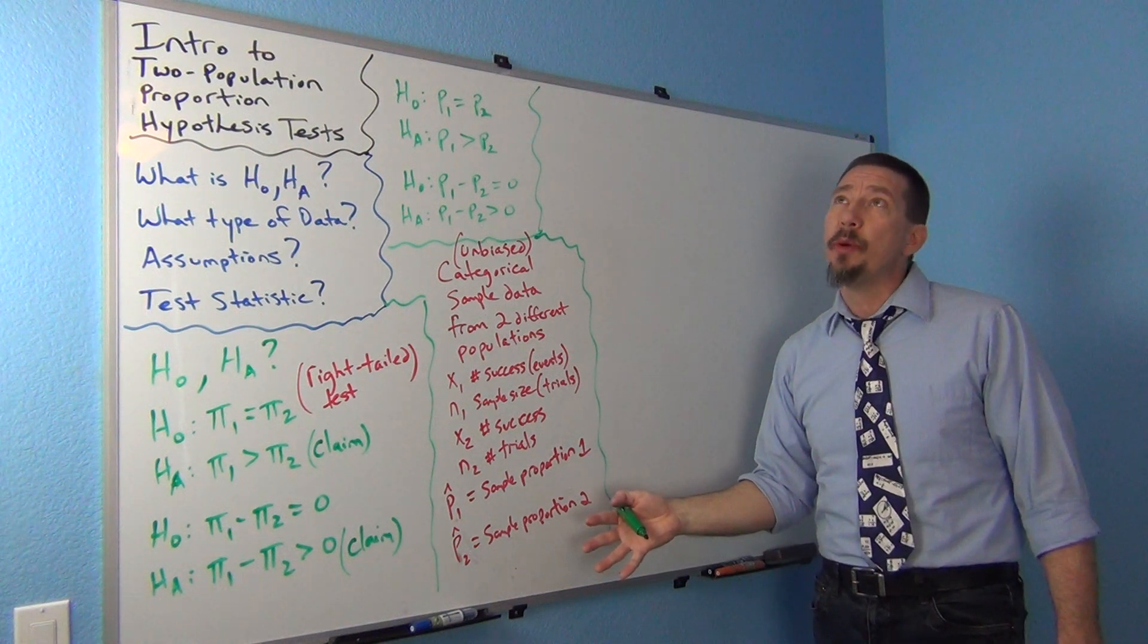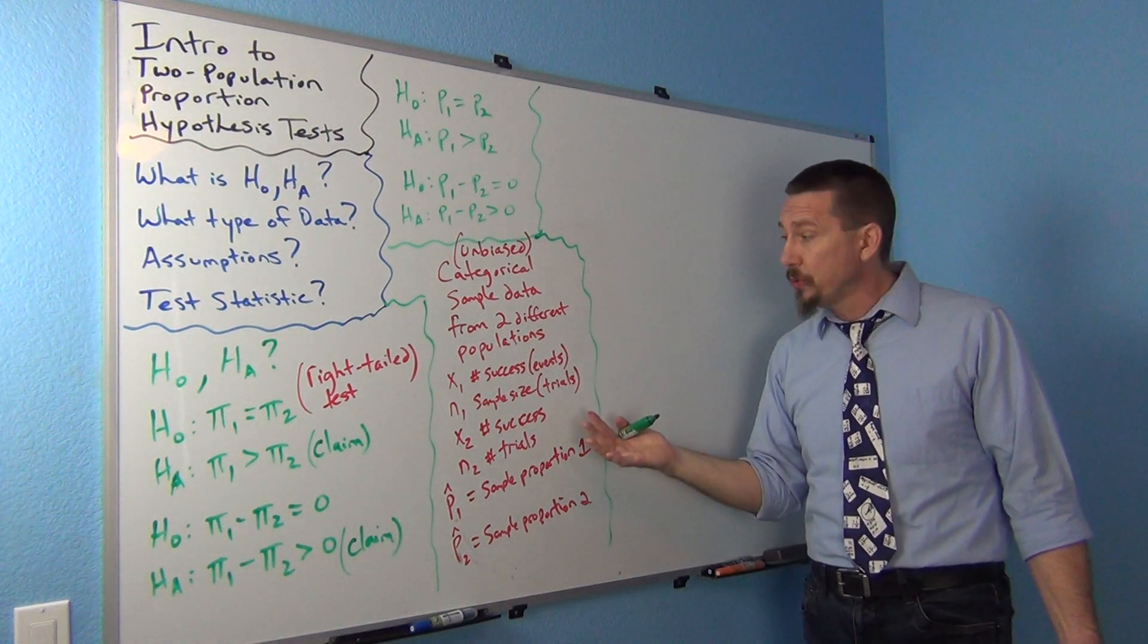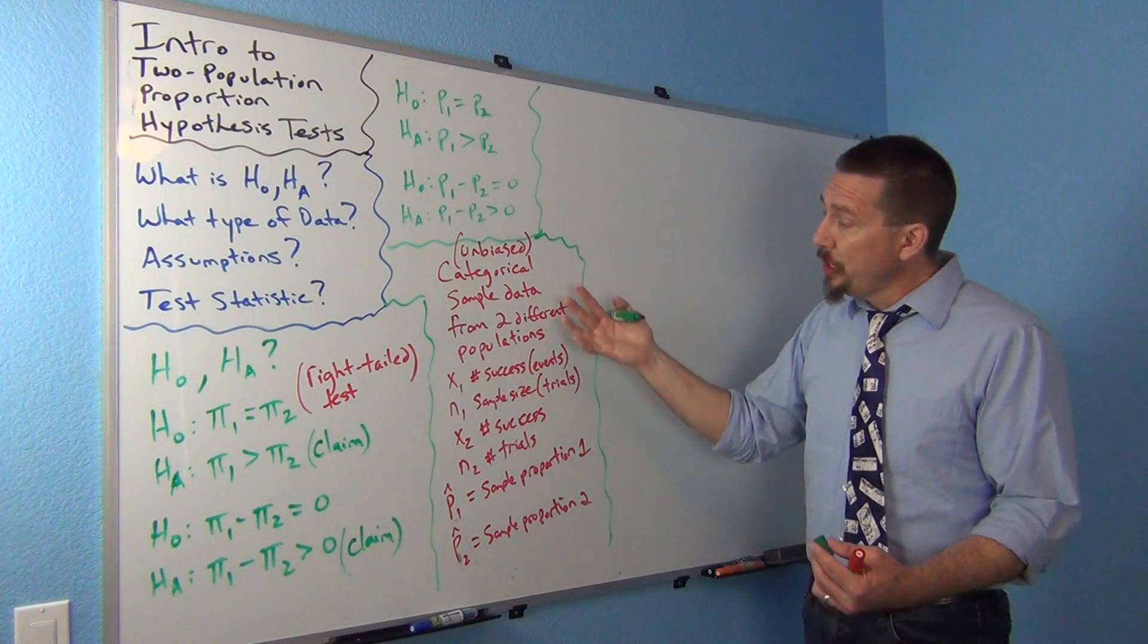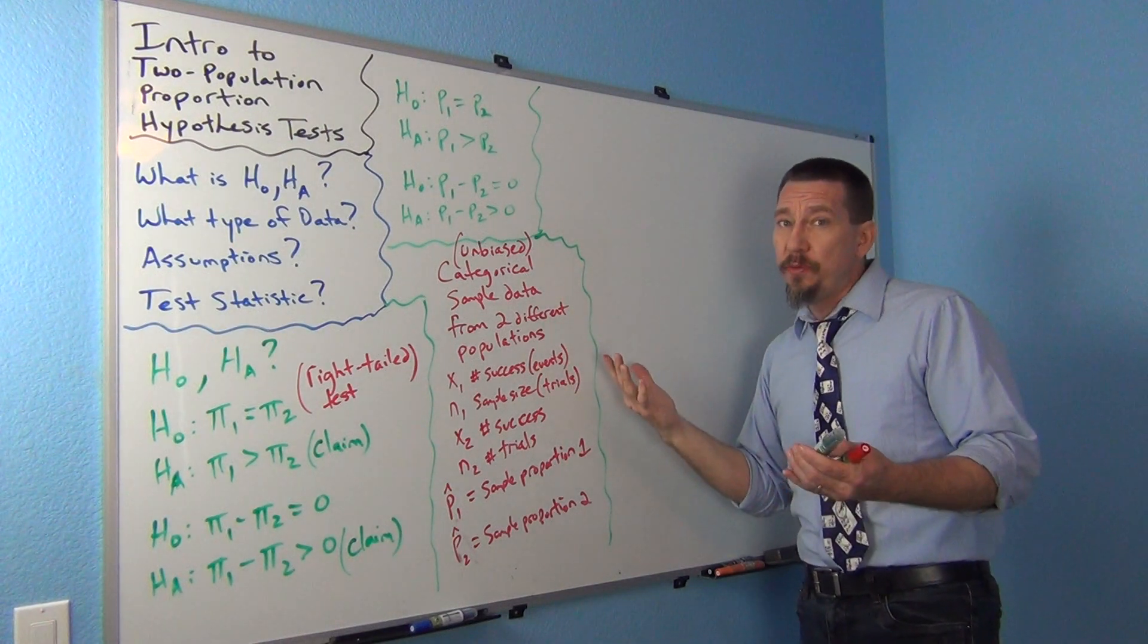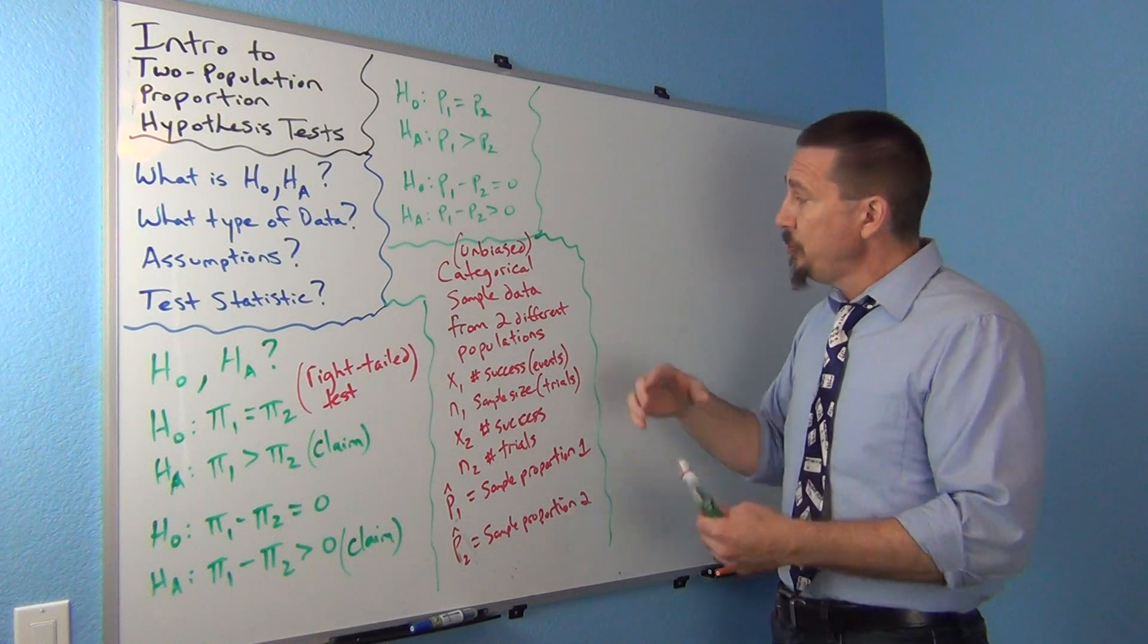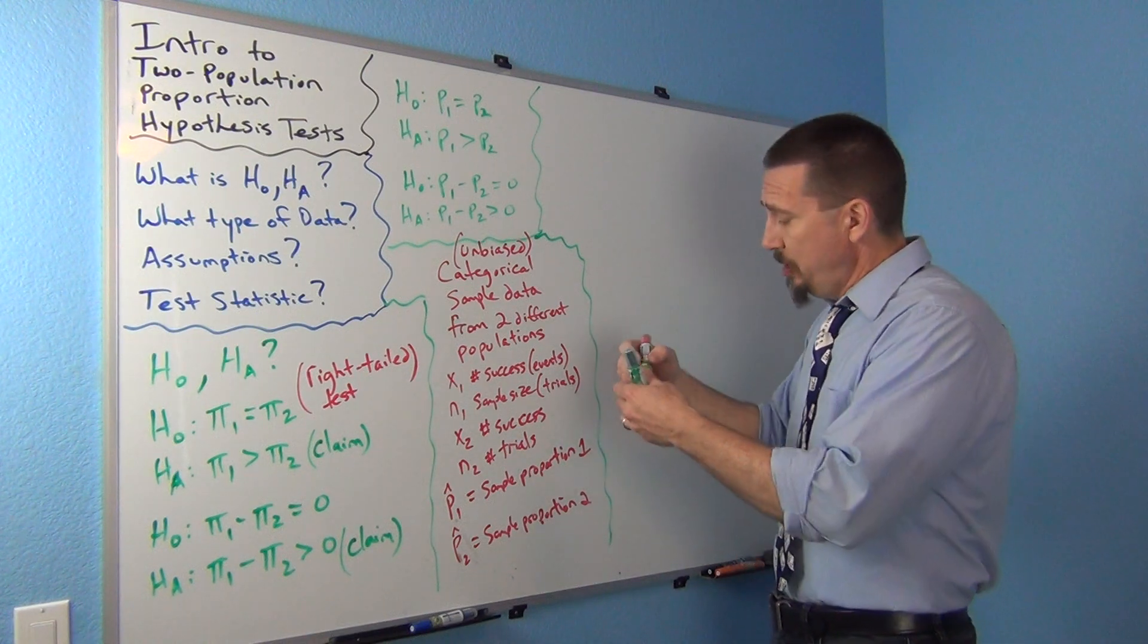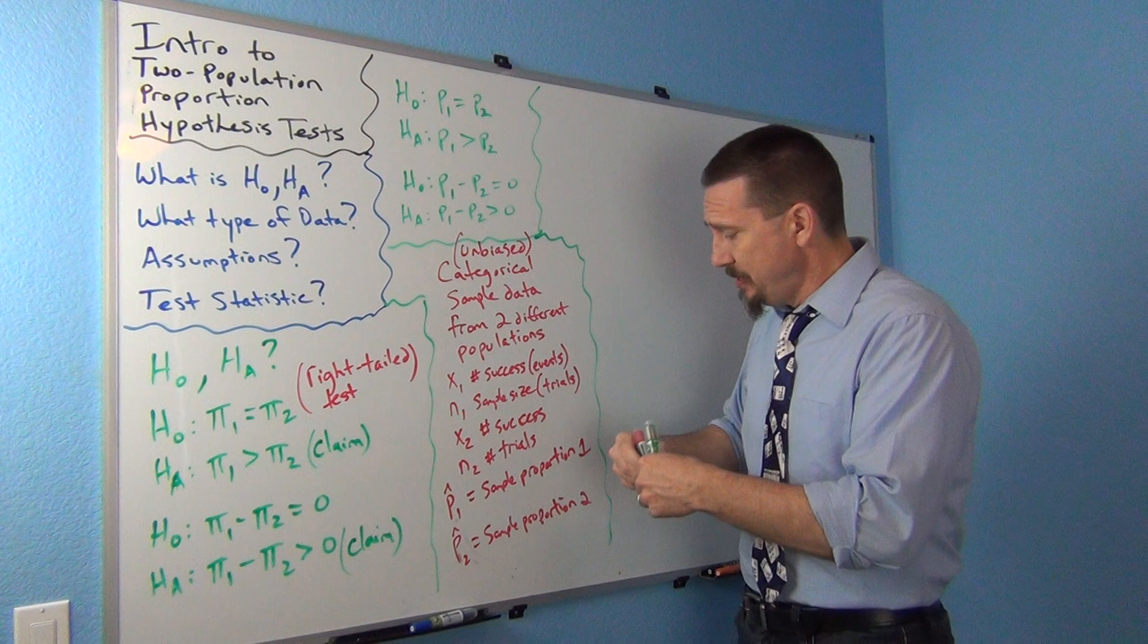It's kind of the same assumptions we went over when we did two population confidence intervals, right? So it's going to be basically your categorical data assumptions for a proportion. If you're doing one or two proportions, the assumptions are about the same.